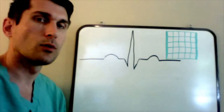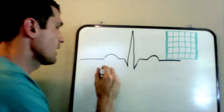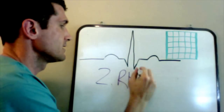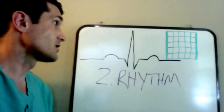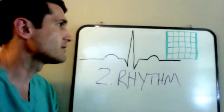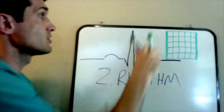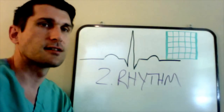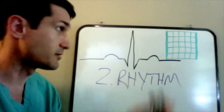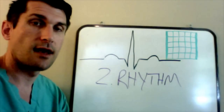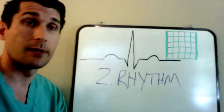Step two is the rhythm — the regularity of the heartbeat from beat to beat. There should be equal distance between each heartbeat. We measure whether there is an equal distance between the R waves using calipers, from QRS complex to QRS complex. A rhythm can either be regular or irregular. If the distance between R waves is constant, we call that regular; if not, we call it irregular. This gives us clues about what type of arrhythmia may be happening.